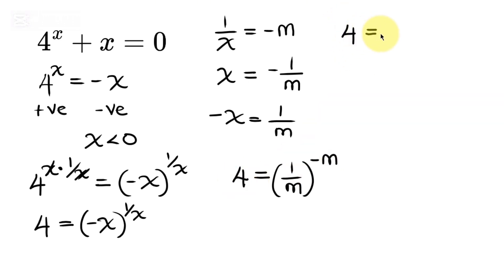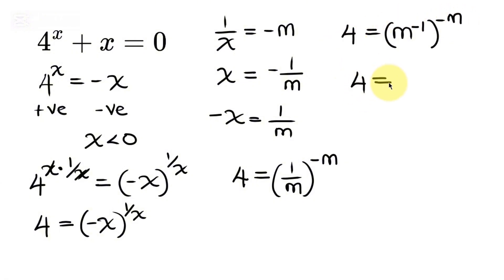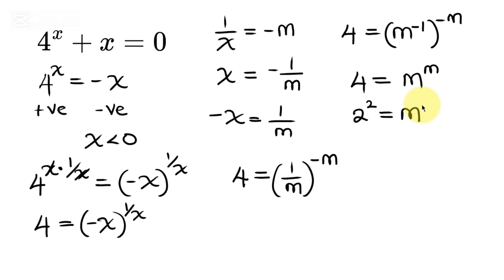So we have 4 equal to 1 over m raised to negative m. The expression 1 over m can be written as m to the power of negative 1, raised to the power of negative m. Applying the law of indices, we multiply the two powers: negative 1 times negative m gives positive m. So we have 4 equal to m to the power of m. Since 4 is the same as 2 squared, comparing both sides, we see that m is equal to 2.